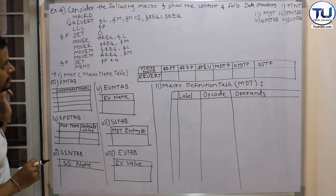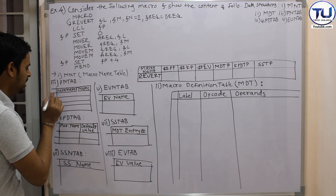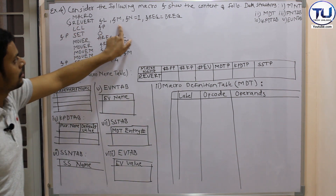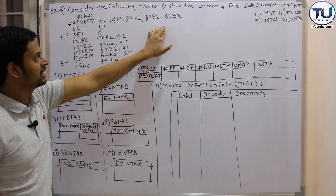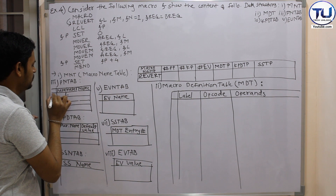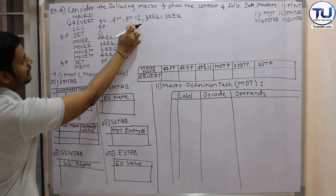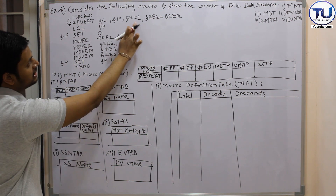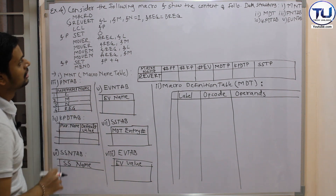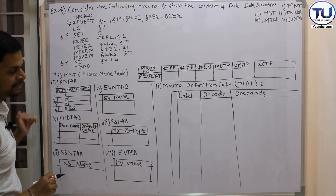The third table is the PN table — parameter name table. The column name is 'parameter name.' To identify parameters, look at the formal parameter list after the macro name. The first parameter is &EL, so neglecting the ampersand we write EL. The second parameter is &M, so M. The third parameter is &N — don't write the default value after it. The fourth parameter is &REGISTER. So in the parameter name table we have four entries: EL, M, N, and REGISTER, written sequentially.